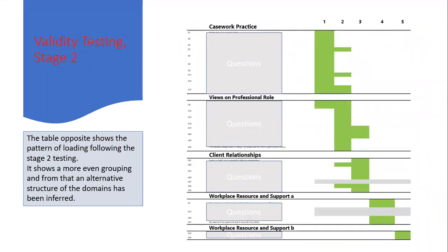We then went back and did stage two of the validity testing. We found that the questions were loading much better to individual factors and there was a more regular pattern of loading — not perfect, but much more regular. However, looking closely at the left-hand side of the chart, the domains were very different. Rather than the fundamental values and the four duties, there were new domains: casework practice, views on professional role, client relationships, and workplace resource and support. We inferred these domains from the way questions were loading and grouping, providing an alternative structure for the domains.